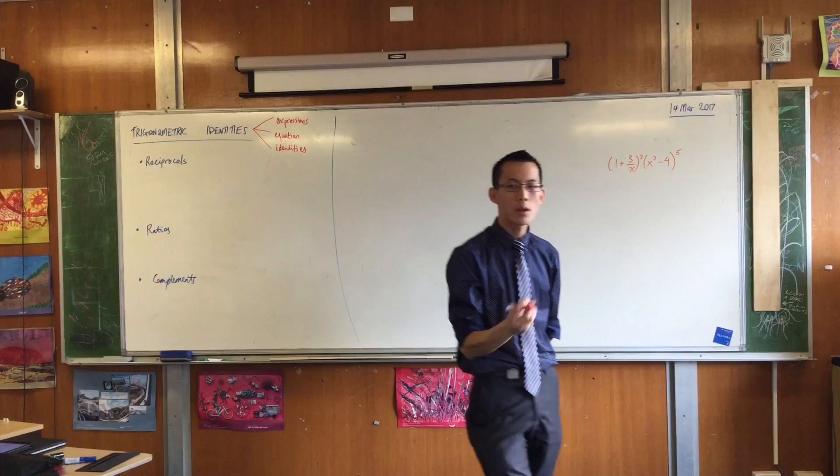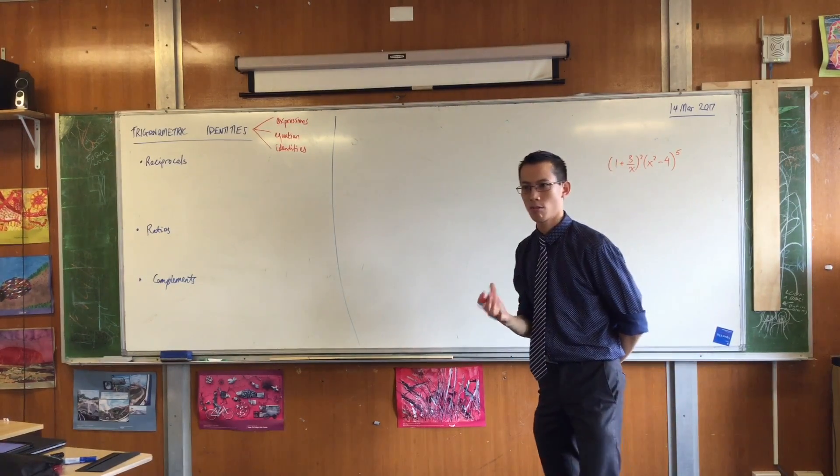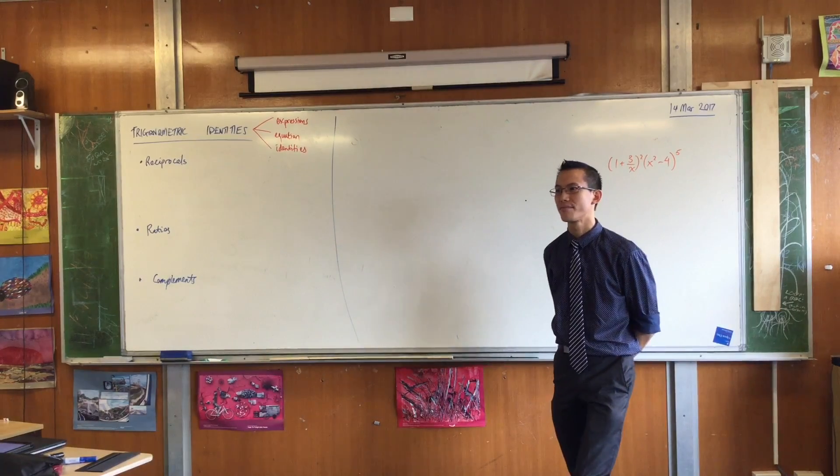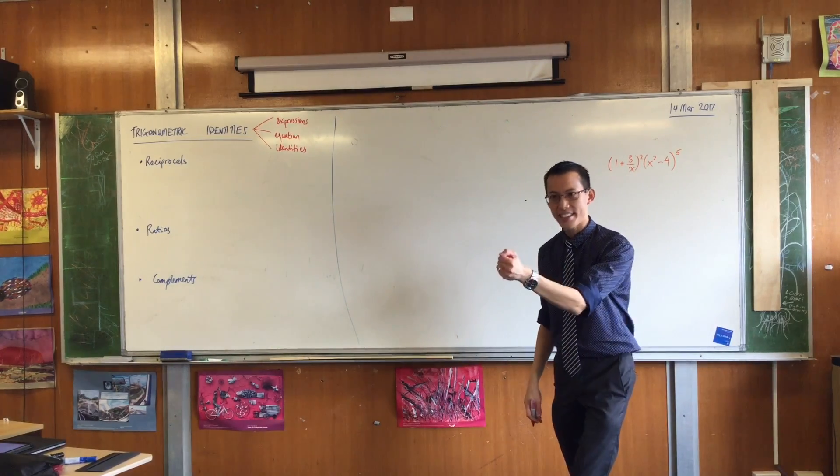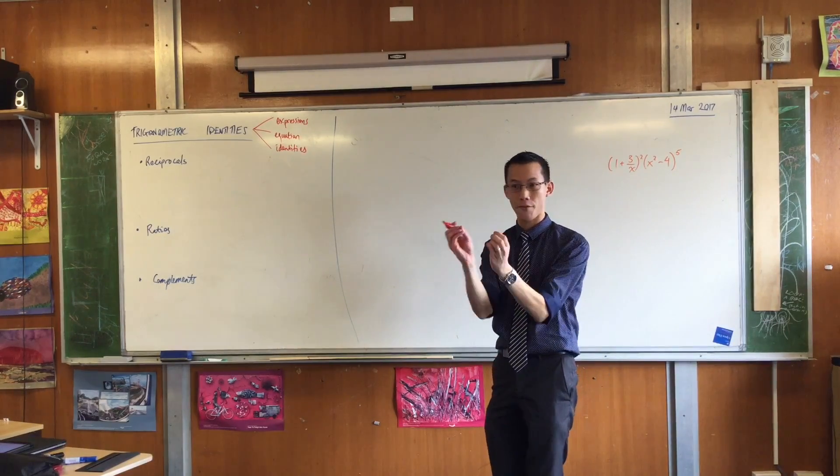Now do you remember, what was it that made an identity different from an equation? What's the difference? Declan, what would you suggest? Identities are true all the time, no matter what value it is, the values you supply for the pronumerals.